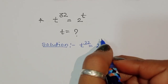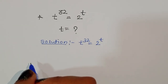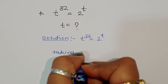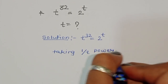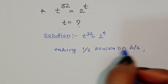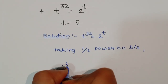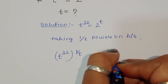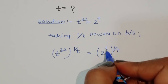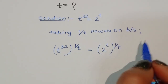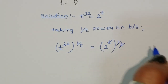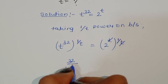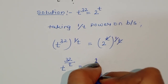t power 32 is equal to 2 power t. We can take 1 upon t power on both sides. So we will get t power 32 raised to 1 upon t is equal to 2 power t raised to 1 upon t. We are taking 1 upon t because we have to cancel this t. So this t is cancelled, and we can write t power 32 upon t is equal to 2 power 1.